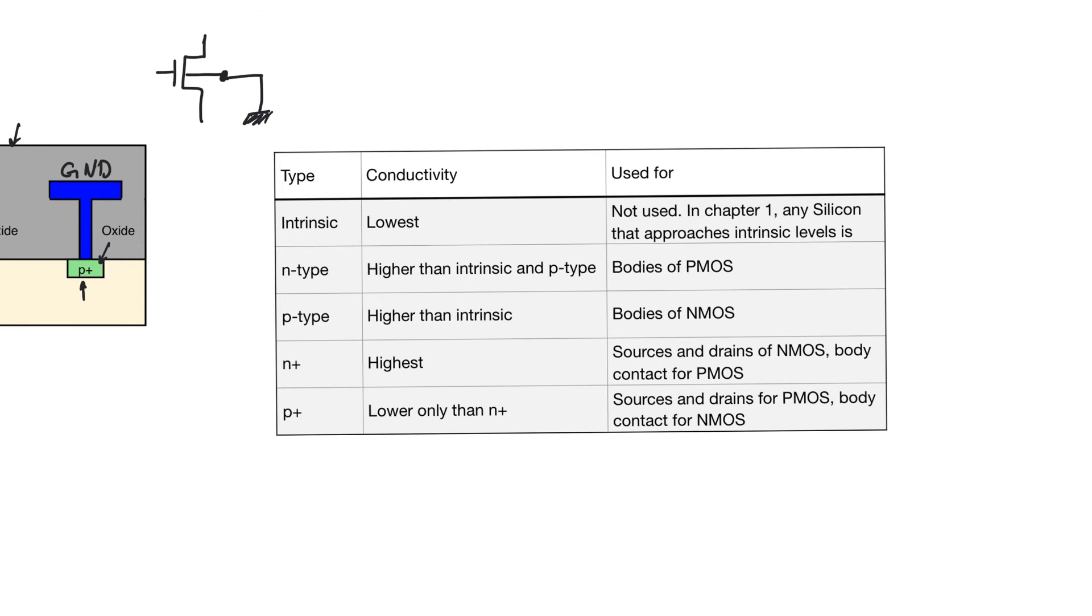Then we have N-plus, which is heavily doped N-type silicon, which is used to make sources and drains of NMOS transistors, as well as well contacts for PMOS transistors. We have P-plus, which is used to make sources and drains for PMOS transistors, and the well and the substrate contact for NMOS transistors.